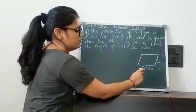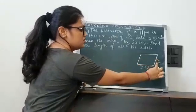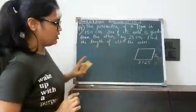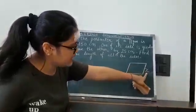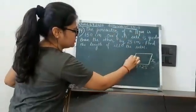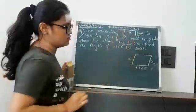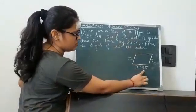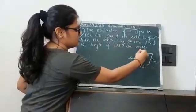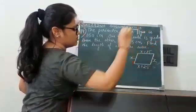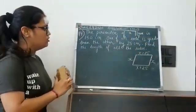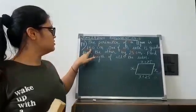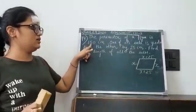The reason for taking these sides is that the opposite sides in a parallelogram are equal. If this one is x cm, the opposite side will also be x cm. If this side is x plus 25, then the opposite side is also x plus 25. The perimeter of this parallelogram is given as 150 cm.